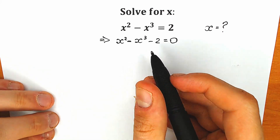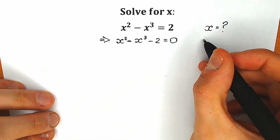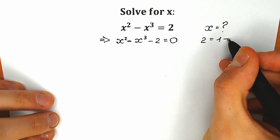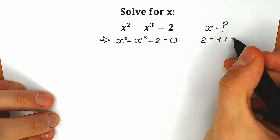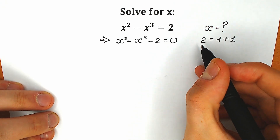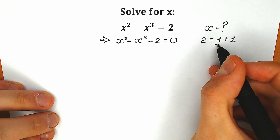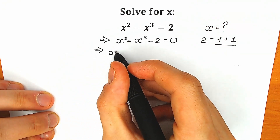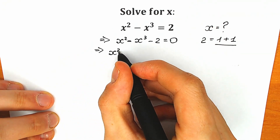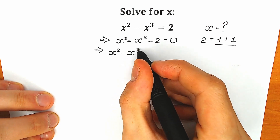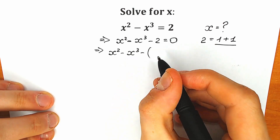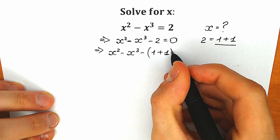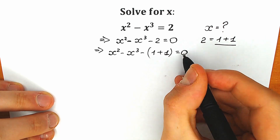Right now, if you look closely, this 2 we can write as 1 plus 1. Don't ask me why — you will see this in 30 seconds. This is an extremely important trick. So instead of that 2, I'm going to write 1 plus 1, giving us x squared minus x cubed minus (1 plus 1) equals 0.